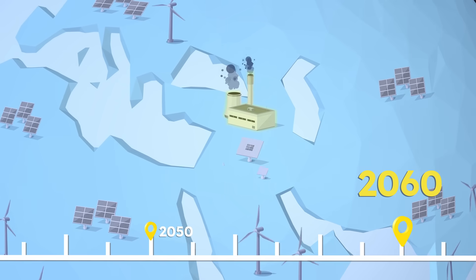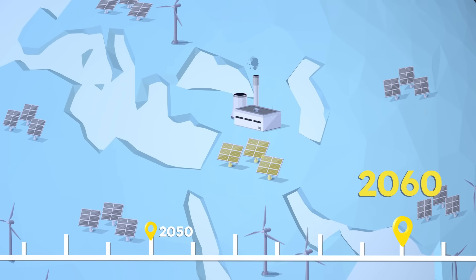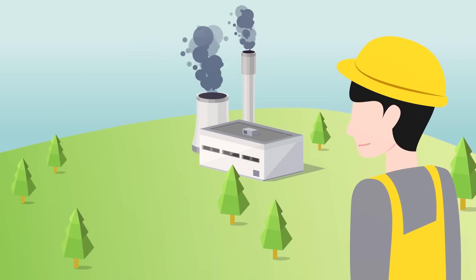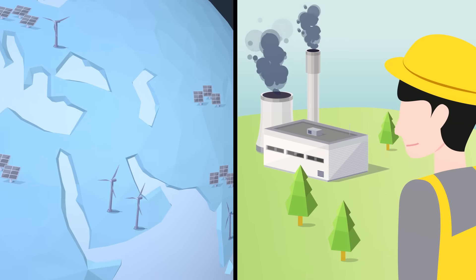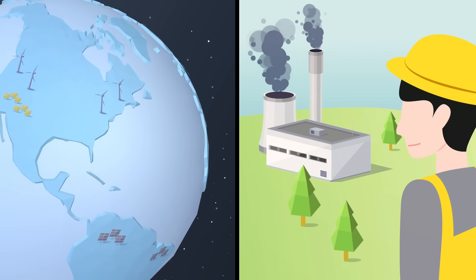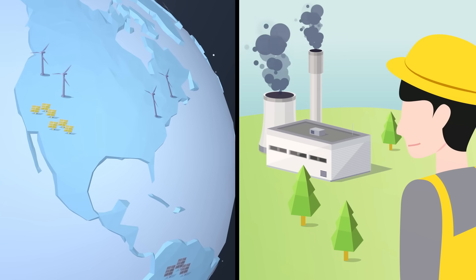Because the only way to close polluting power plants without causing blackouts is to build renewable energy nearby. But it does have to be near that fossil fuel plant. Building solar panels a thousand miles away wouldn't work. That would just replace other power plants over there, and they were already clean.